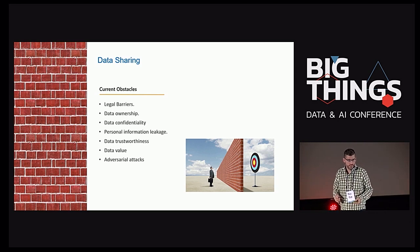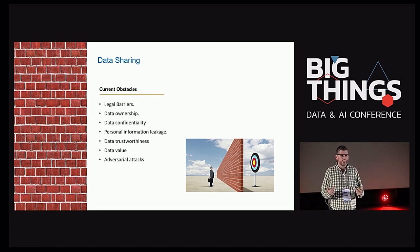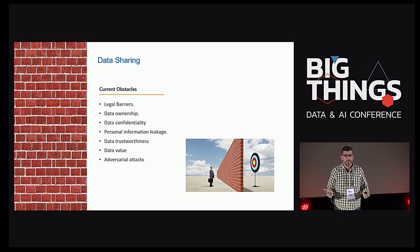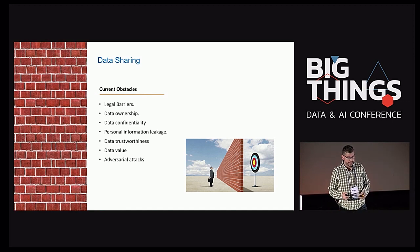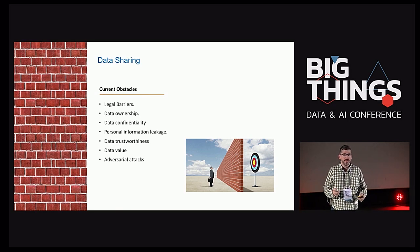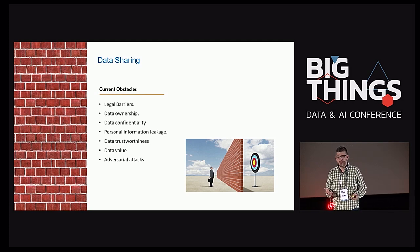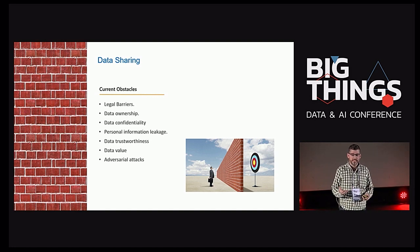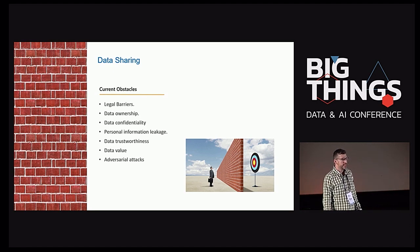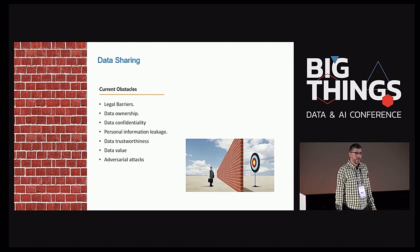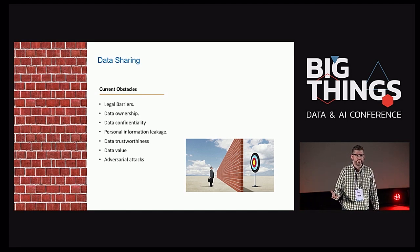These are not the only obstacles. We have data trustworthiness: I know how I collected and annotated my data, but I don't know what the other partners did, so maybe I don't trust the quality of their dataset. Another obstacle is data value: imagine I pay for a dataset, but I don't want to pay if I don't know what the accuracy of my predictive model will be — because what I want is a predictive model, not the data itself. And we also have adversarial attacks, which I will explain at the end — I can receive a dataset that introduces a backdoor in a neural network after training.